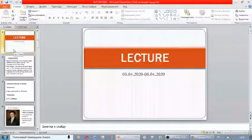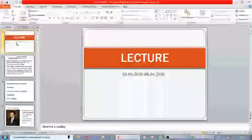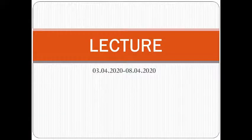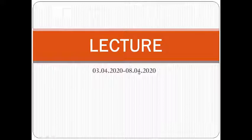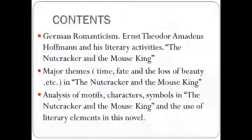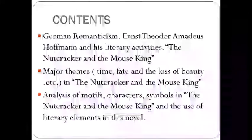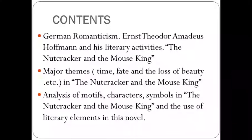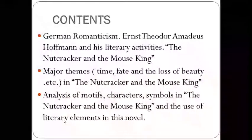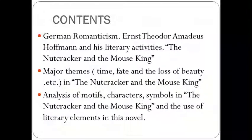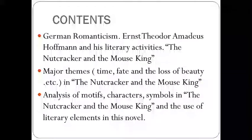Today's lesson is about German Romanticism and Hoffman and his novella 'Nutcracker and the Mouse King.' We have three contents according to our syllabi: German Romanticism and E.T.A. Hoffman and his literary activities, the Nutcracker and the Mouse King, major themes including time, fate, and loss of beauty, and analysis of motifs, characters, and symbols.